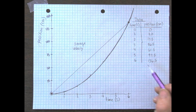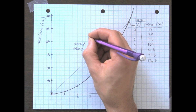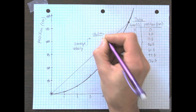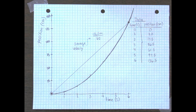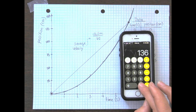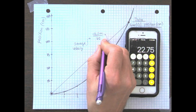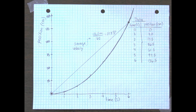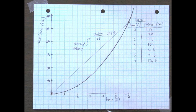Our last data point is 136.5 centimeters at 6 seconds. So if we started at 0 and went up to 136.5 centimeters, and it took 6 seconds to get there, then 136.5 divided by 6 gives us 22.8 centimeters per second. So our average velocity is 22.8 centimeters per second — it took 6 seconds to go 136.5 centimeters.